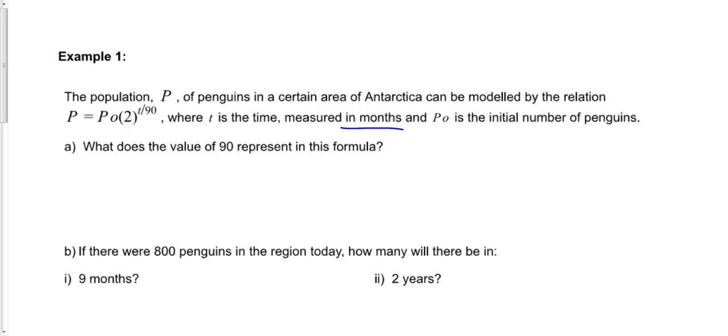So we want to know what the value 90 represents in this formula. We know that this is going to be a doubling time question. We can tell that because in the formula, the base value is 2. That means it's a doubling time question. So the 90 represents the amount of time, the time it takes the population to double.